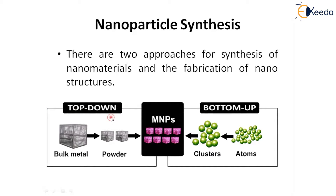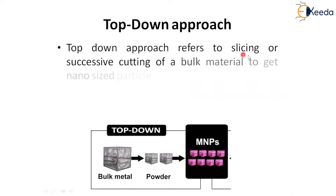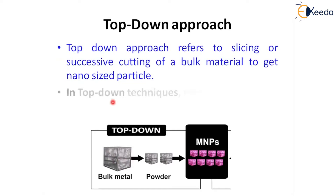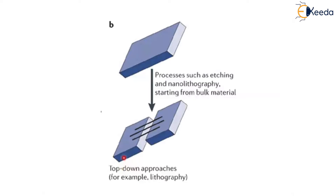In detail, the top-down approach refers to the slicing or successive cutting of a bulk material to obtain nano-sized particles. The starting material is in solid shape. Processes such as etching and nanolithography are used, starting from the bulk material in the top-down approach.